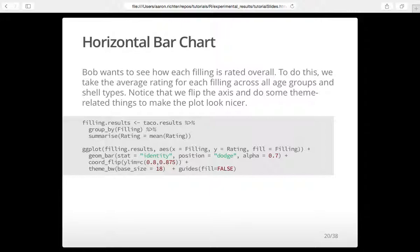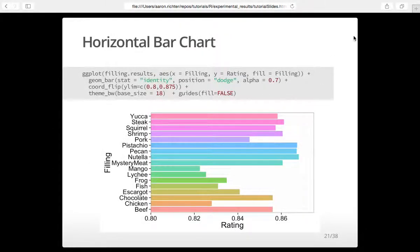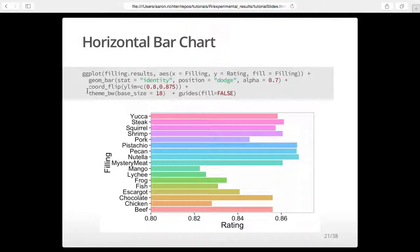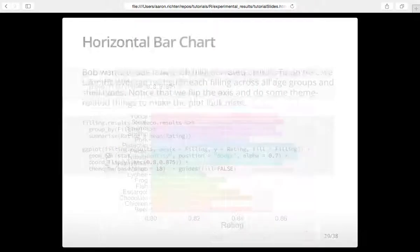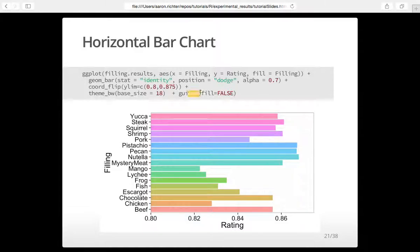Next is a horizontal bar chart. Since we have a lot of levels in the filling factor, putting it on the x-axis makes it hard to read. So we do a bar chart horizontally — x is filling, y is rating, then we use coord_flip to flip it. If you turned it 90 degrees the other way, the labels on the x-axis would be hard to read. We also set the y-limit from 0.8 to 0.875 because the ratings don't start changing until around there, so going from 0 would add unnecessary information. The legend is also hidden since it would be redundant.